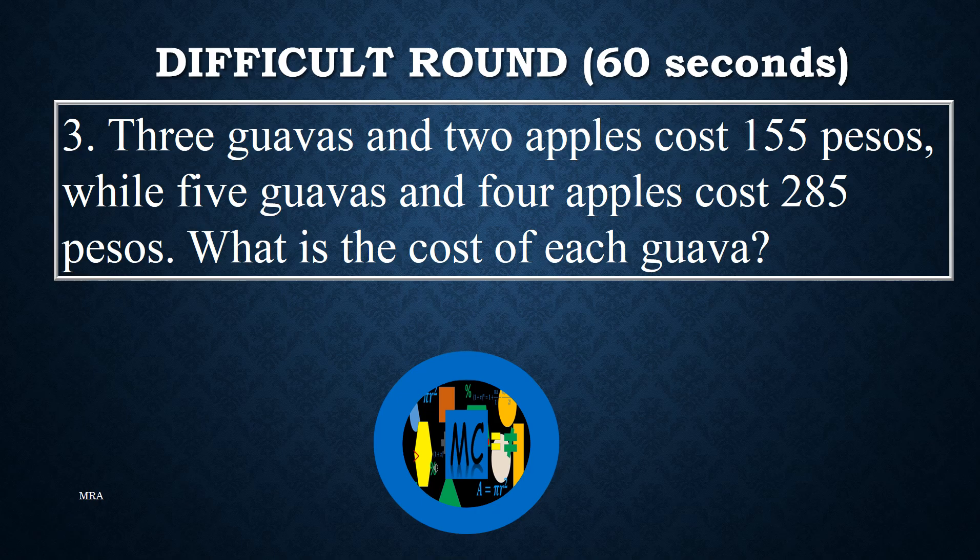Problem 3: Three guavas and 2 apples cost 155 pesos, while 5 guavas and 4 apples cost 285 pesos. What is the cost of each guava?